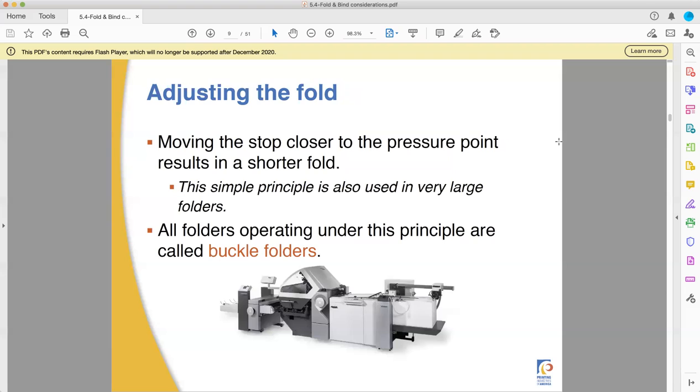You can adjust the fold, you can move the stop closer, it makes a shorter one, you move a stop farther, it makes a longer one. And this is generally what's called a buckle folder because the paper buckles.